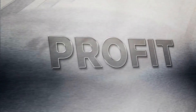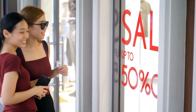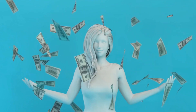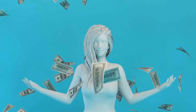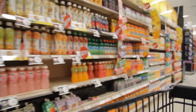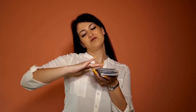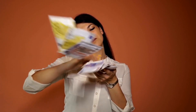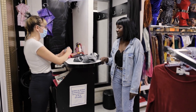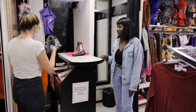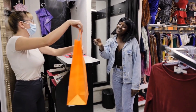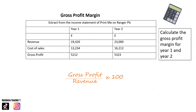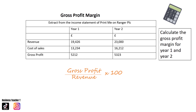Gross profit margin. The gross profit margin shows the gross profit made on sales revenue. Gross profit is earned before direct costs are deducted. What counts as good gross profit really depends on the type of business. Higher profit margins are preferred because it means more gross profit is being made per £1 of sales. Gross profit margin can be improved by increasing prices and/or reducing the direct cost of sales. To calculate it, divide gross profit by revenue and multiply by 100. The answer will always be a percentage.